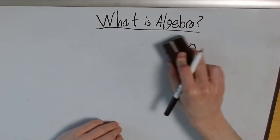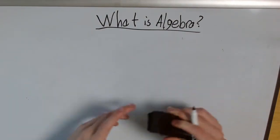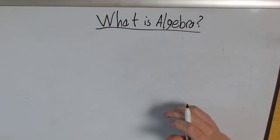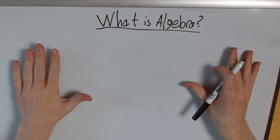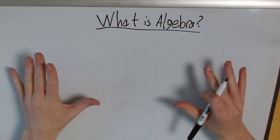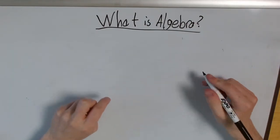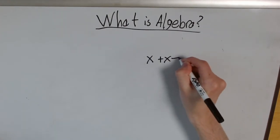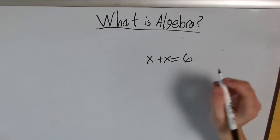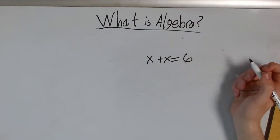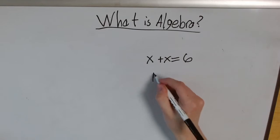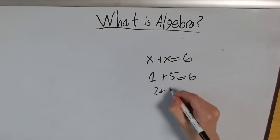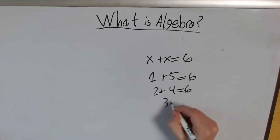However, there are a few exceptions that we have to be especially aware of when dealing with algebra. First, variables in a single problem cannot have different values. For example, if I had x plus x equals 6, there are many possible values that I can add up to be 6. I can have 1 plus 5 equals 6, 2 plus 4 equals 6, and 3 plus 3 equals 6.